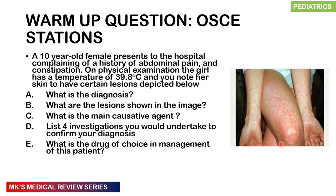Here's our warm-up station, which is an OSCE station. A 10-year-old female presents to the hospital complaining of a history of abdominal pain and constipation. On physical examination, the girl has a temperature of 39.8 degrees Celsius and you note her skin to have certain lesions depicted below. What is the diagnosis? What are the lesions shown in the image? What is the main causative agent? List four investigations you would undertake to confirm your diagnosis. What is the drug of choice in management of this patient? You may pause the video right now, write down your answers, and I will give you the answer at the end of the lecture.